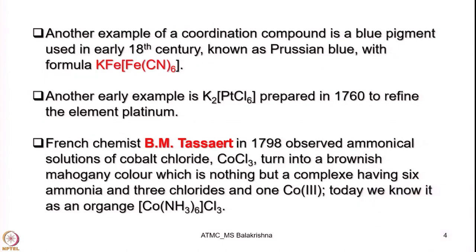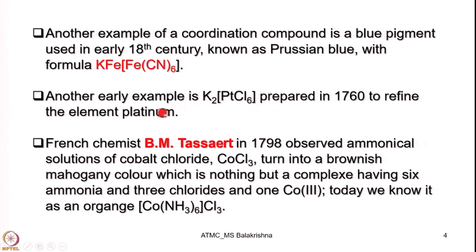Another example of a coordination compound is the well-known blue pigment used in early 18th century, known as Prussian blue, with formula KFe[Fe(CN)6]. It has an interesting structure which I shall show at a later stage. Another early example was potassium hexachloroplatinate, prepared in 1760 to refine the element platinum.